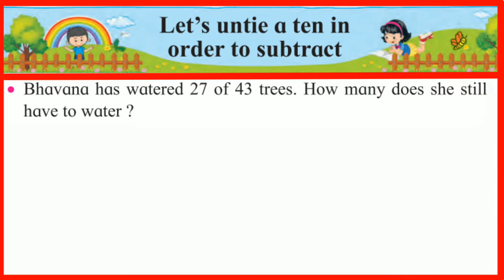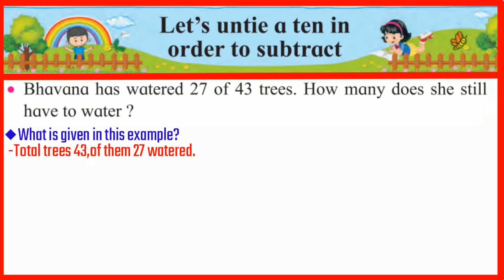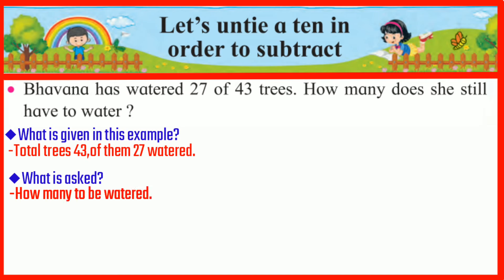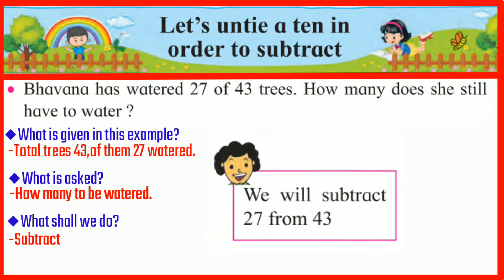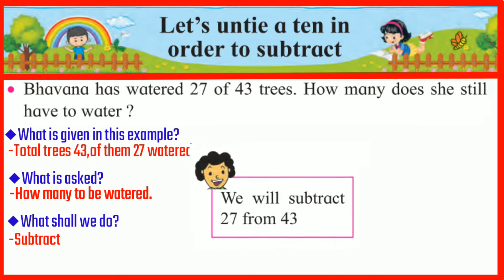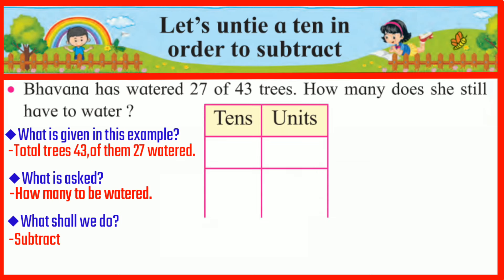Let's see one more example. Bhauna has watered 27 of 43 trees. How many does she still have to water? What is given: total trees 43, of them 27 watered. What is asked: how many are yet to be watered? We shall subtract — we will subtract 27 from 43.